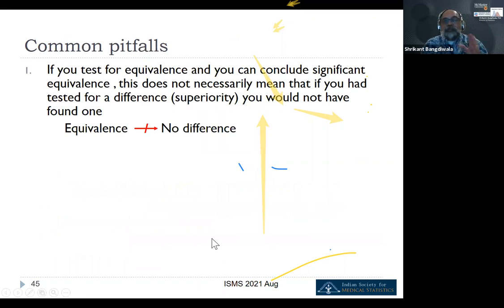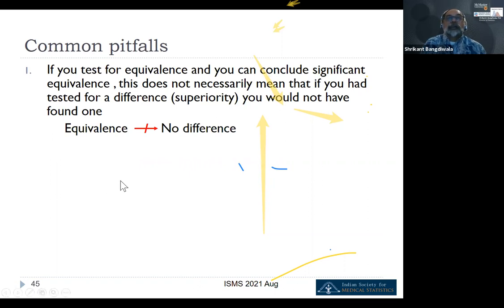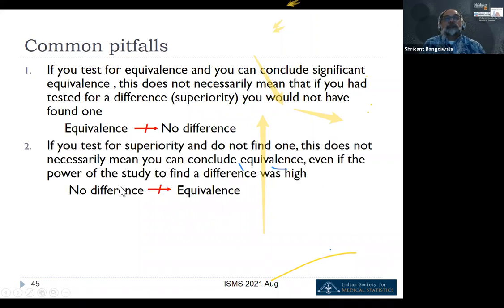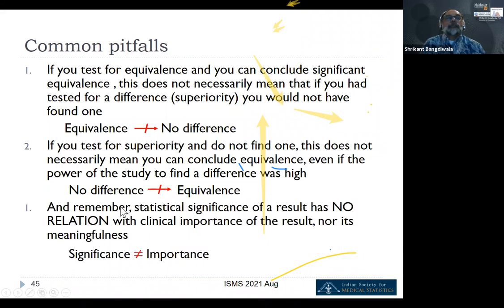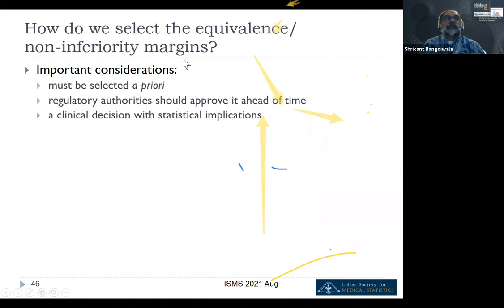Common pitfalls: if you test for equivalence and can conclude equivalence, that does not mean that if you had tested for superiority you would not have found one — they're not equivalent hypotheses. And if you test for superiority and do not find one, this does not necessarily mean you can conclude equivalence. Also remember: significance and importance are different things and have nothing to do with each other. Selecting the equivalence and non-inferiority margins must be done a priori before the study is designed.